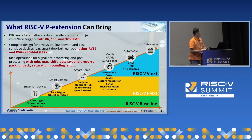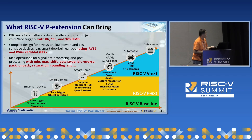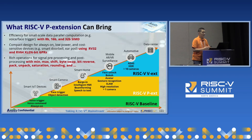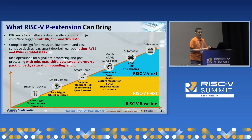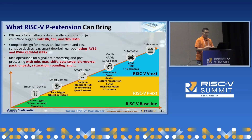Let me briefly introduce the P-extension. The P-extension sits between the RISC-V baseline and the V-extension. Instead of relying on dedicated registers like the V-extension, the P-extension reuses RISC-V general purpose registers, making it more compact and low cost. RVP provides a rich set of instructions originally tailored for signal processing, but in terms of LLM inference, RVP is still useful because it provides efficient instructions to compute matrix multiplication as well as 4-bit quantization.